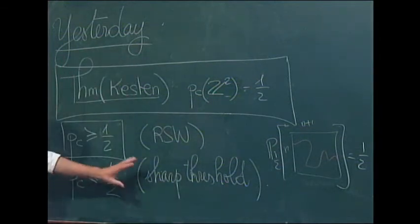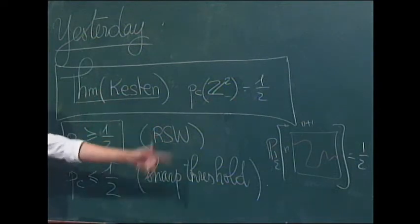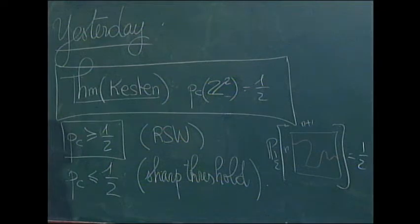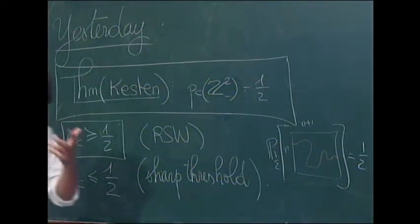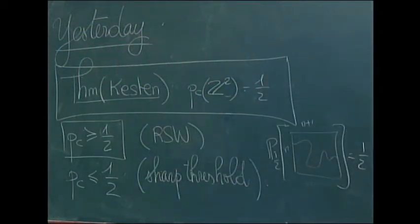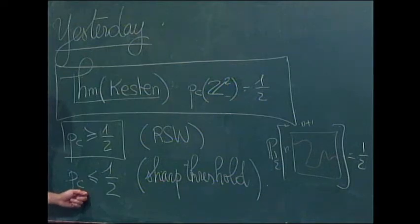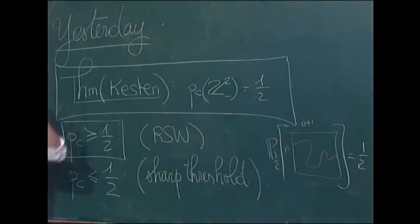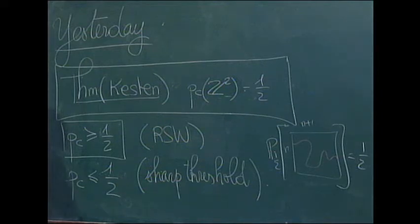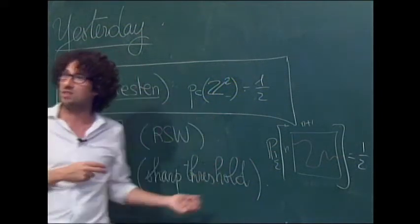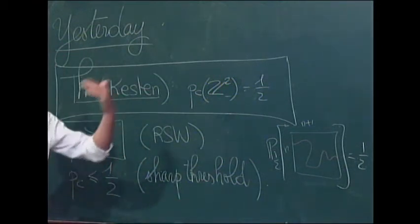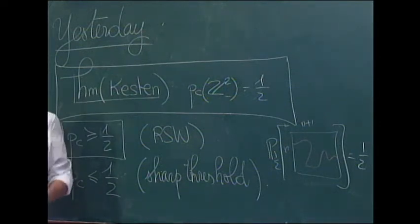We proved that for p strictly larger than 1/2, these things were going to 1, and actually going to 1 pretty quickly. I didn't explain to you Kesten's original way of proving it, which goes back to the 80s and was by hand. I proved to you that this was true using a more evolved, more general argument, based on the sharp threshold theorem. So what I want to do today is start by giving you an alternative way of proving this bound, which is more suitable to higher dimension.